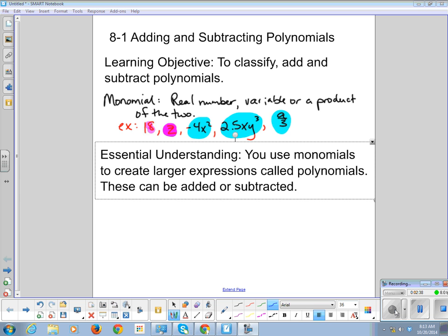All right, so part of our learning objective is to classify. To classify a polynomial, we need to talk about the degree. The degree of a monomial is the sum of the exponents of the variables.